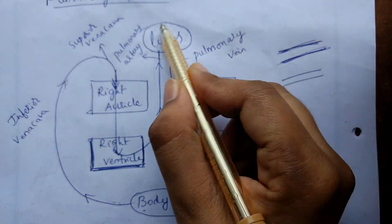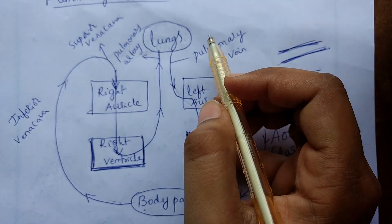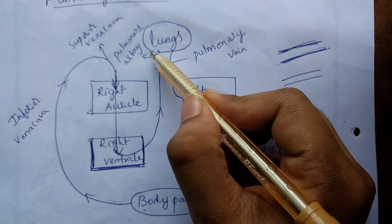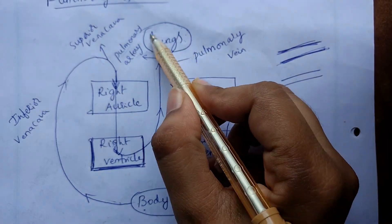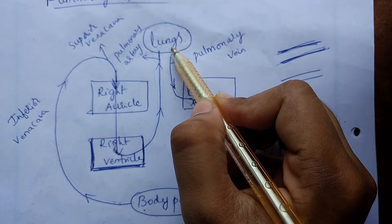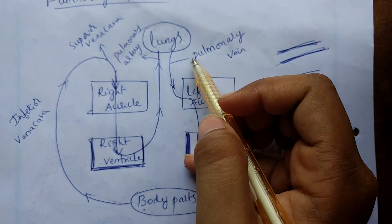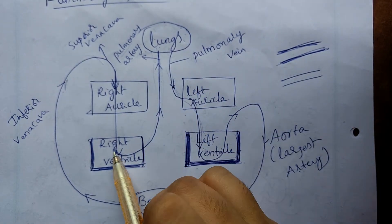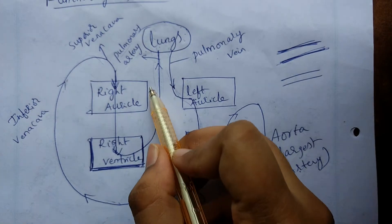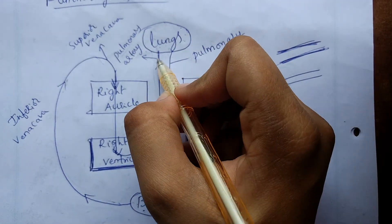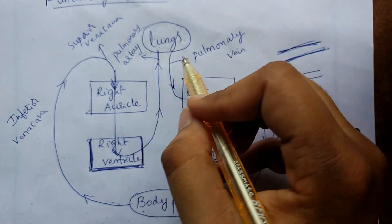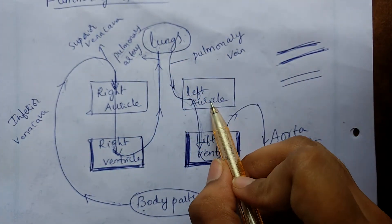From the right ventricle, impure blood is pumped into the lungs. The lungs filter the blood and provide nutrients, producing pure blood. The blood goes to the lungs via the pulmonary artery. From the lungs, pure blood goes to the left auricle.